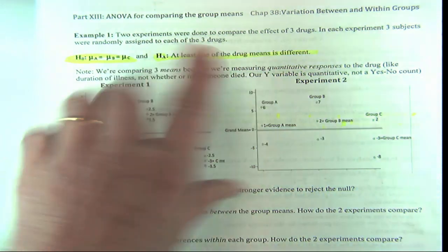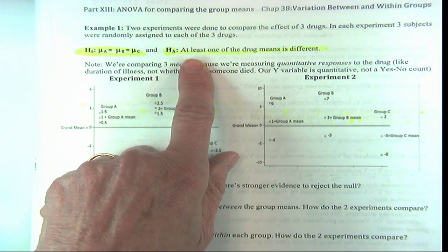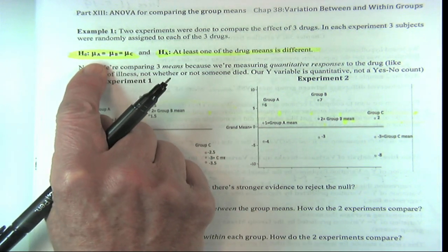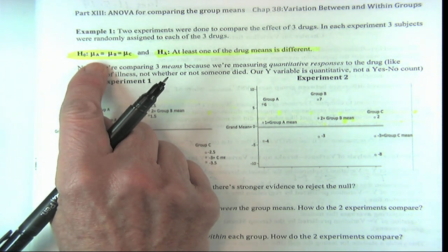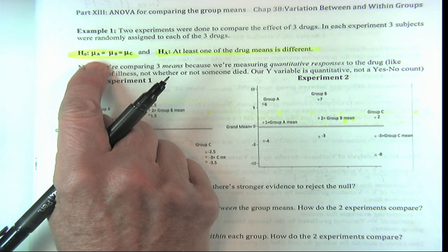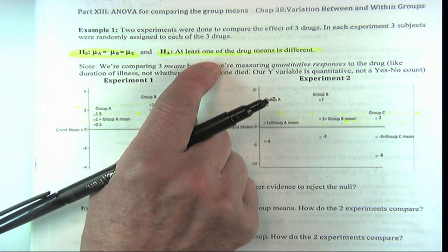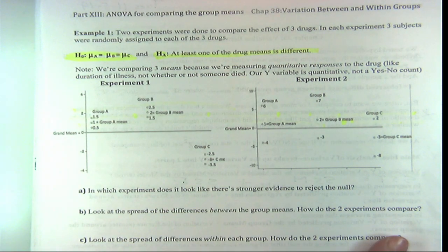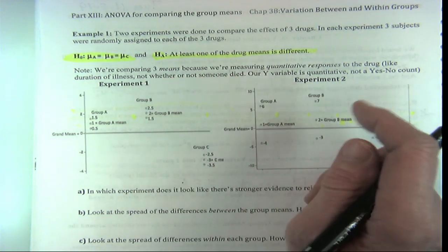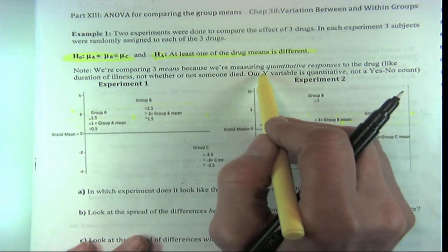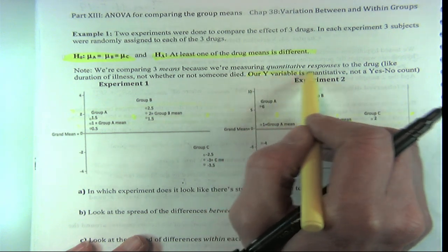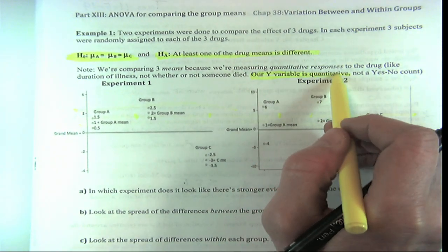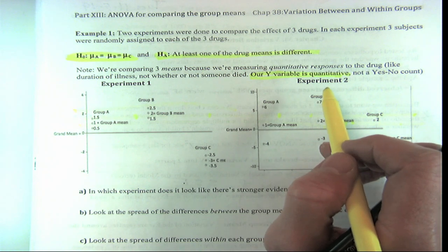It's the same null and alternative we've had before when comparing two groups — the two group means are the same in the population, even though in the sample they might look different. And the alternative was they were different. Here, at least one of them is different. So now we're comparing three means because we're measuring a quantitative Y variable — not a yes/no count. In all these ANOVAs, our Y is a quantitative variable.